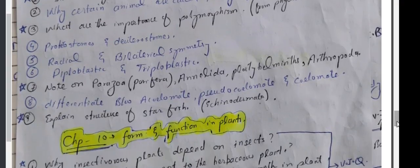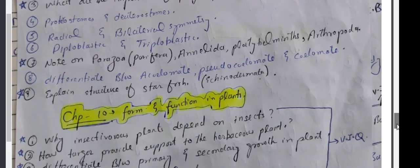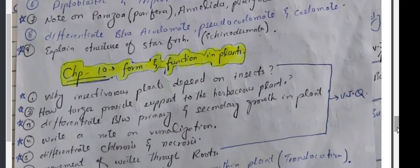Note on Parazoa, Polyphora, Annelida, Arthropoda. Differentiate between Acoelomate and Pseudocoelomate. Explain structure of starfish. This is, that is Echinodermata, that is starfish. Question comes.